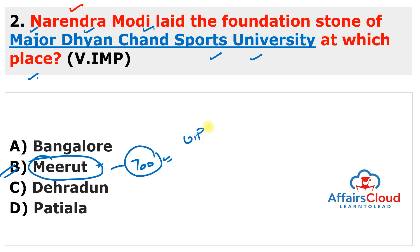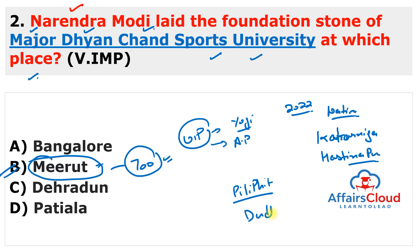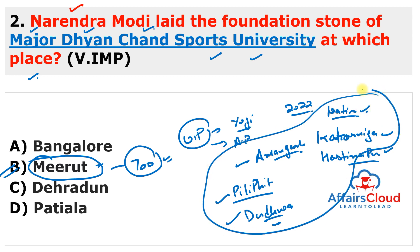Also remember about Uttar Pradesh: Chief Minister Yogi Adityanath, Governor Anandiben Patel. There are elections in 2022. Important wildlife areas include Katarnia Ghat Wildlife Sanctuary, Hastinapur Wildlife Sanctuary, National Chambal Sanctuary, and tiger reserves: Pilibhit Tiger Reserve, Dudhwa Tiger Reserve, and Amangad Tiger Reserve.